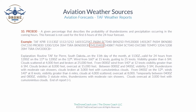From 0400 Zulu on the 12th: winds from 140 degrees at eight knots, visibility greater than six statute miles, scattered clouds at 4,000 feet, overcast at 8,000 feet.